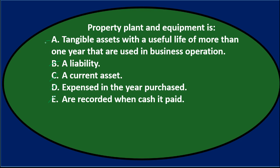Question and answer: Property, plant, and equipment is A — tangible assets with a useful life of more than one year that are used in business operations.